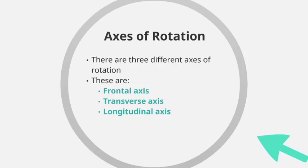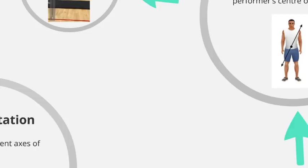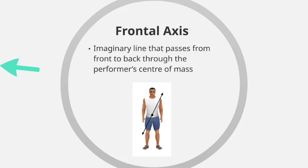In terms of axes of rotation, we have three different types: the frontal axis, the transverse axis, and the longitudinal axis. We're going to take a look at these in more depth now.